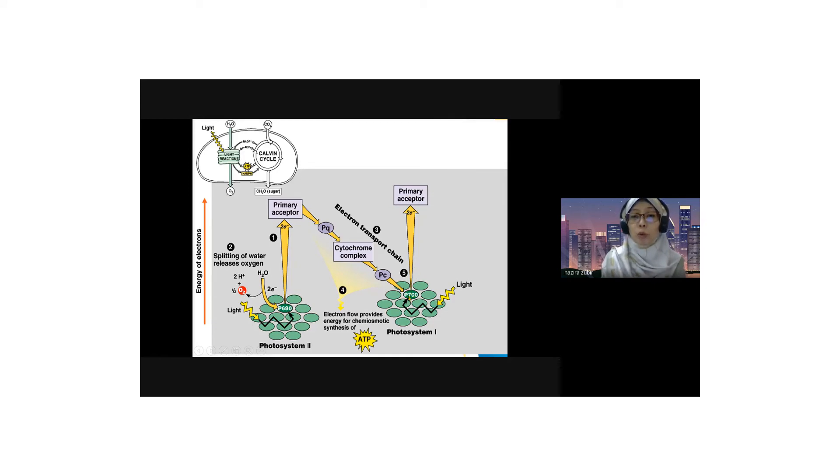There will be a hole at P700, known as P700+. The electron hole will be replaced by an electron from the electron carrier from PS2, which is PC or plastocyanin. The electron from PC replaces the electron hole at P700. From the primary electron acceptor, the two electrons then transfer to another electron carrier.